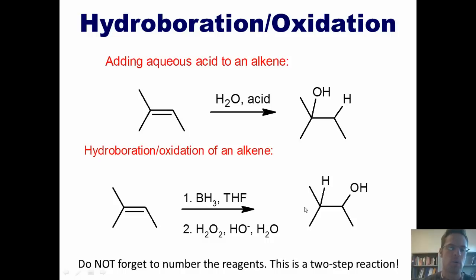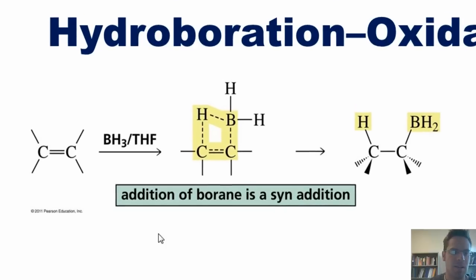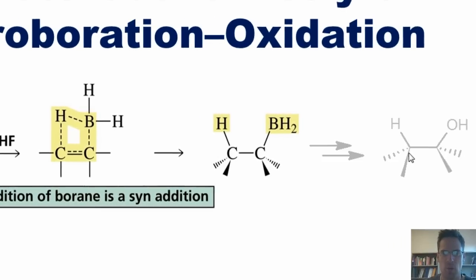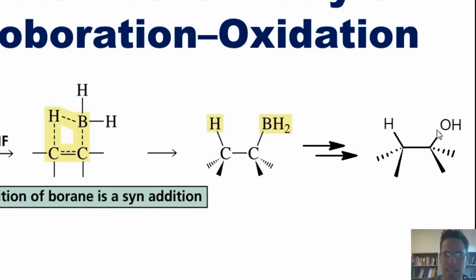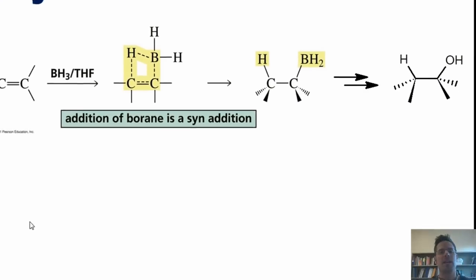Now that we've learned about stereochemistry, we might wonder what stereochemical outcome occurs when we do a hydroboration oxidation. If I take my alkene and treat it with BH₃·THF, the borane coordinates with the double bond and ends up forming an intermediate. When I later introduce my peroxide, hydroxide, and water, I eventually replace the BH₂ substituent with an OH. The OH ends up being on the same side as the hydrogen — thus, the OH and the hydrogen added are cis to each other. In a rotatable molecule, we often use the term syn to each other.